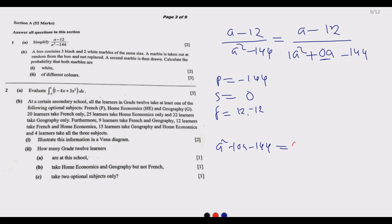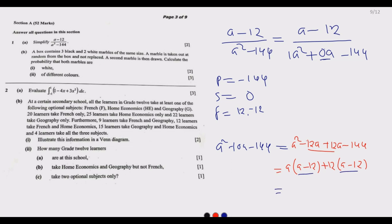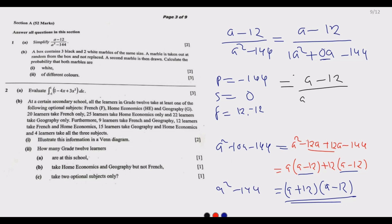So a squared plus 0·a minus 144 can be written as a squared minus 12a plus 12a minus 144. Factoring out common terms: a(a minus 12) plus 12(a minus 12). Since (a minus 12) is common, this gives us (a plus 12)(a minus 12), which is equivalent to a squared minus 144.